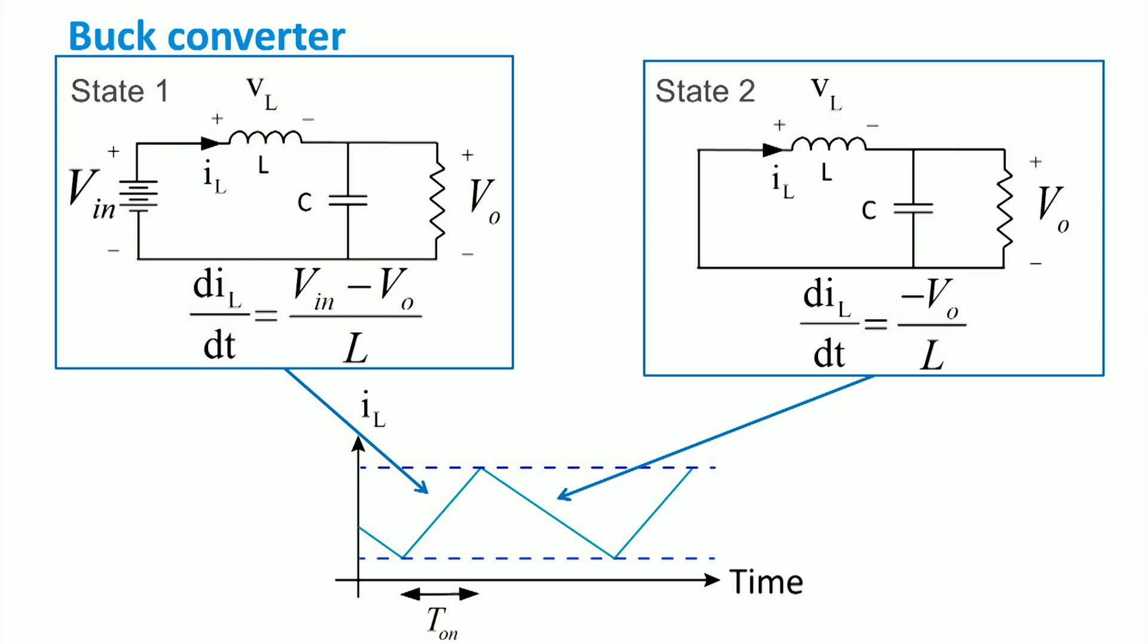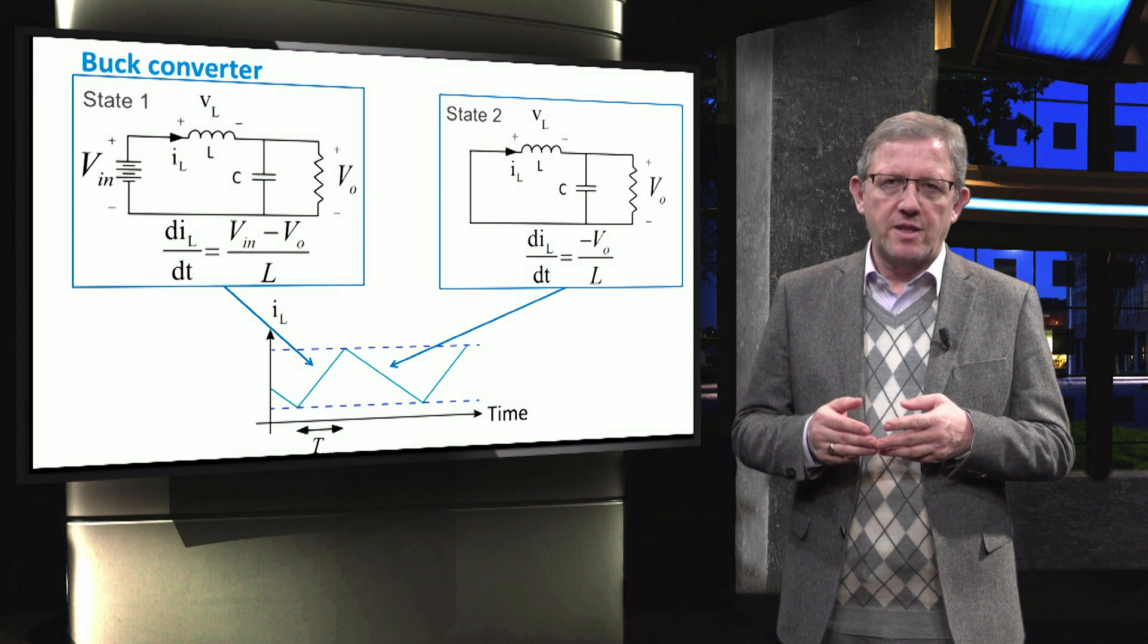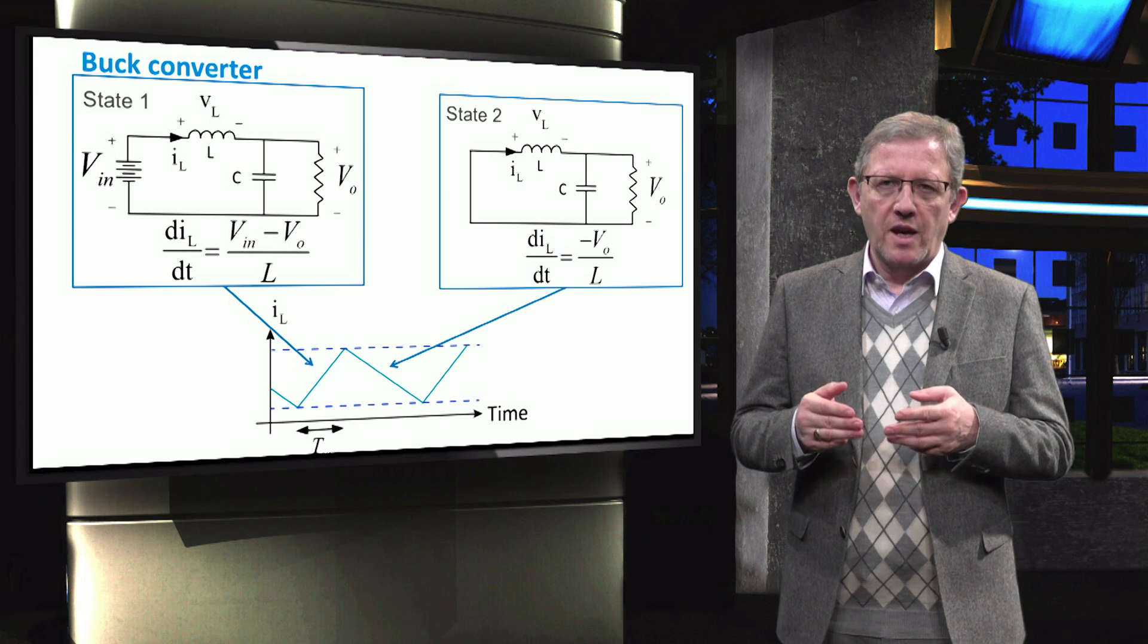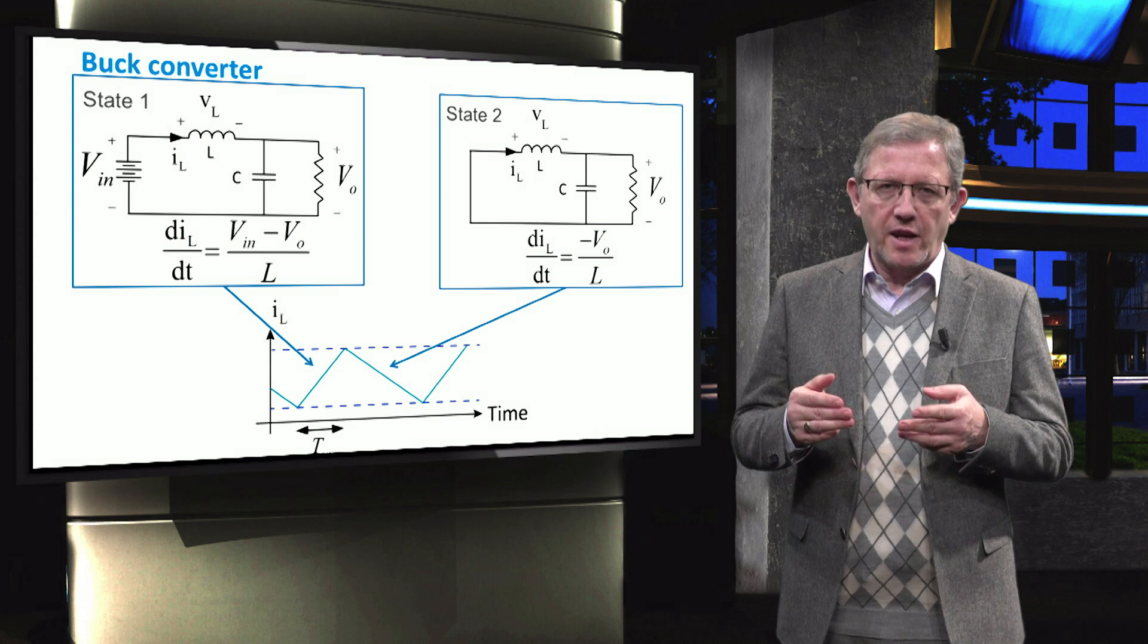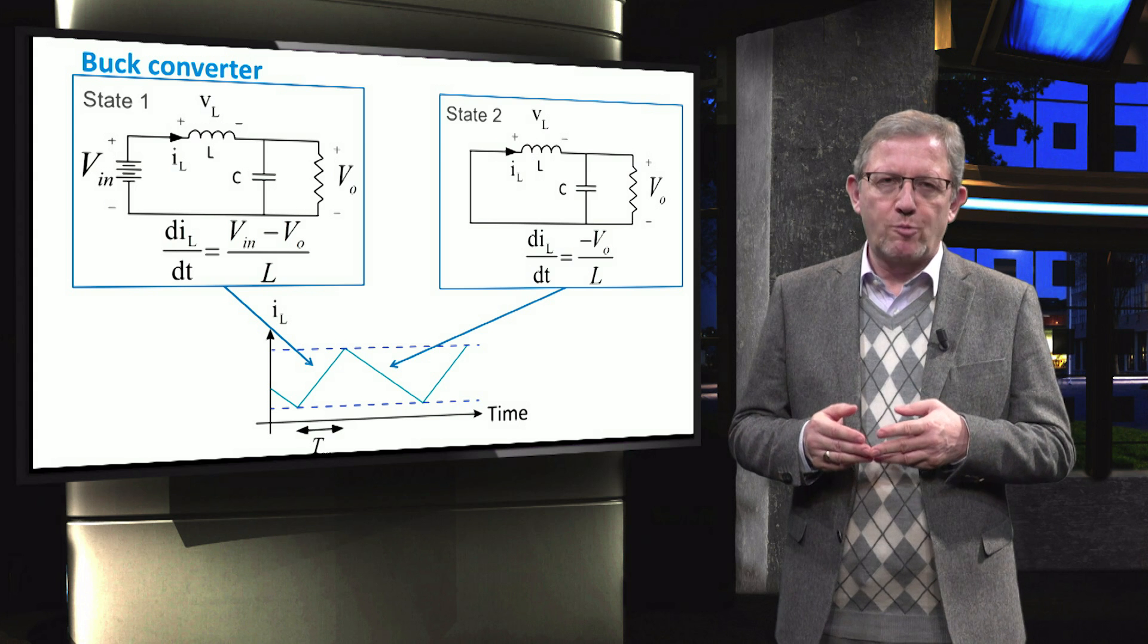During the second operating state, the voltage across the inductor is equal to the minus of the output voltage. During this state, the inductor releases the stored energy through resistive load and the current derivative only depends on the output voltage.